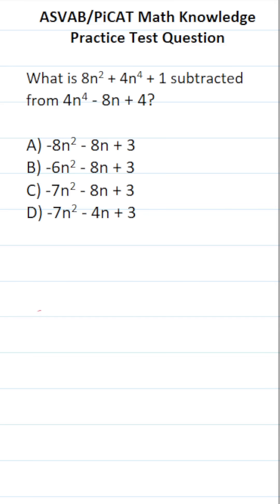This math knowledge practice test question for the ASVAB and PiCAT says, what is 8n squared plus 4n to the fourth plus 1 subtracted from 4n to the fourth minus 8n plus 4?